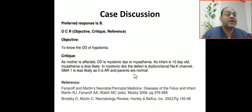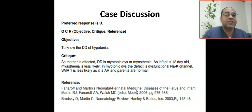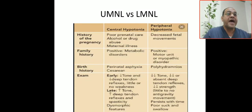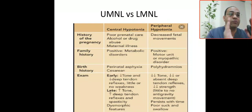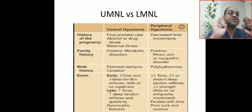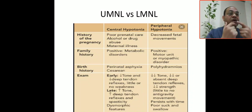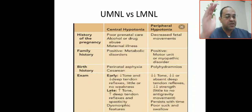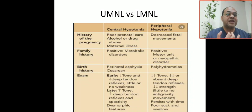Our reference for this case is neonatal-perinatal medicine by Fanaroff and Martin. Now, how to differentiate upper motor neuron from lower motor neuron: lower motor neuron presents with hypotonia, hyporeflexia, and fasciculation — we call this the triad. Tongue fasciculation is also a key sign.